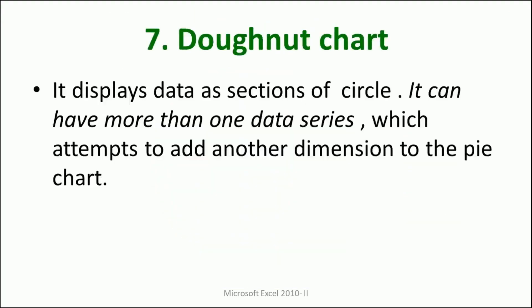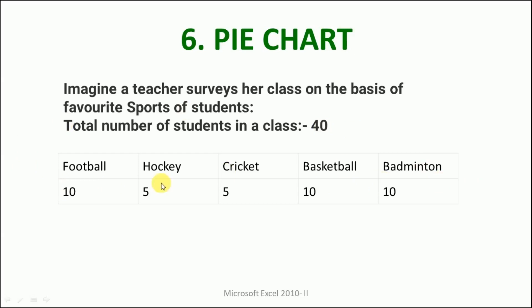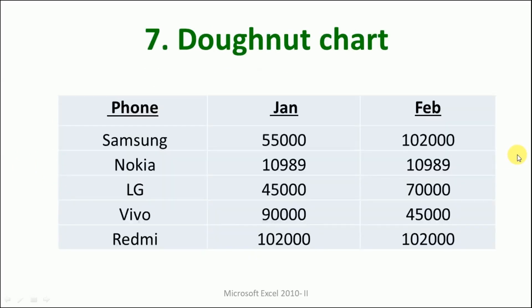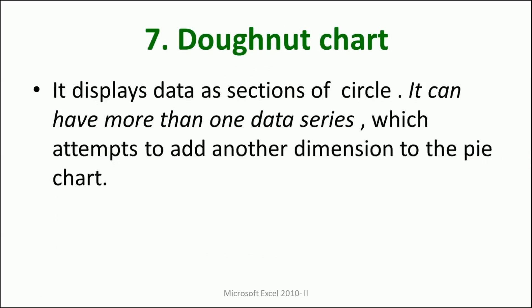The next is the donut chart. You might have eaten donuts — it looks somewhat like that, but not exactly. It displays data as sections of circles. It can have more than one data series, which is different from the pie chart where we had only one data series. That is what makes the donut chart different from the pie chart.